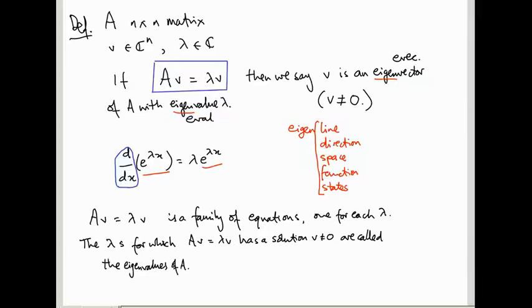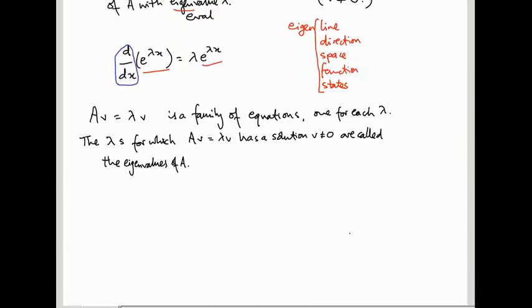That's going to be what we talk about in the next video. For the rest of this video, I want to answer the simpler question: if somebody gives you an eigenvalue of A, how do you figure out what the eigenvectors are? So let's do an example. If somebody gives you A = [[2,-1],[1,0]] and tells you that lambda = 1 is an eigenvalue of A.